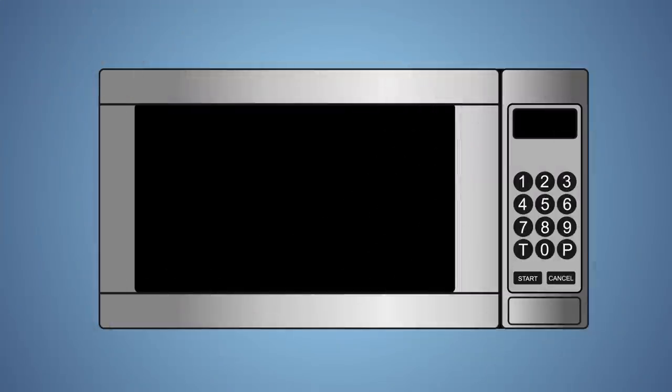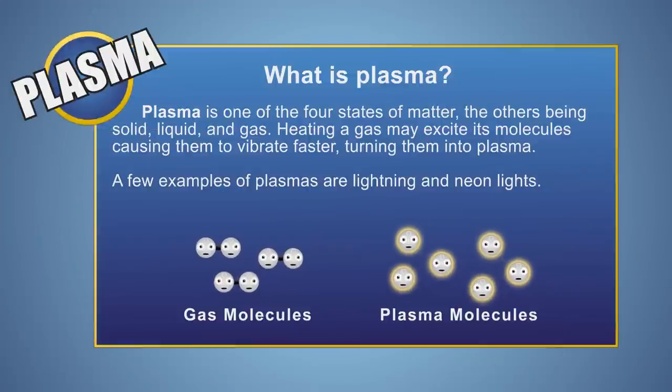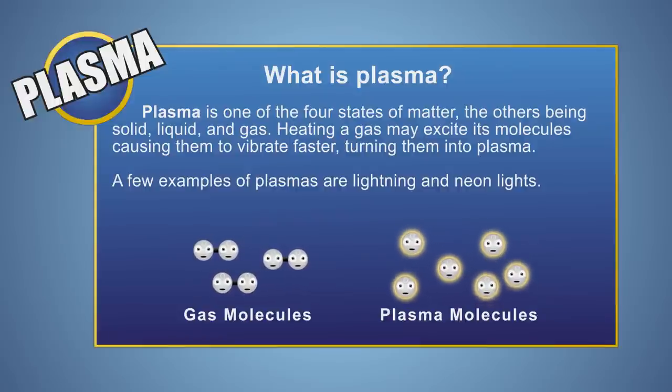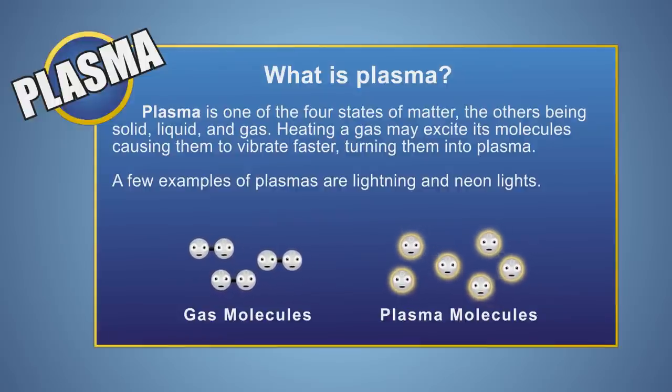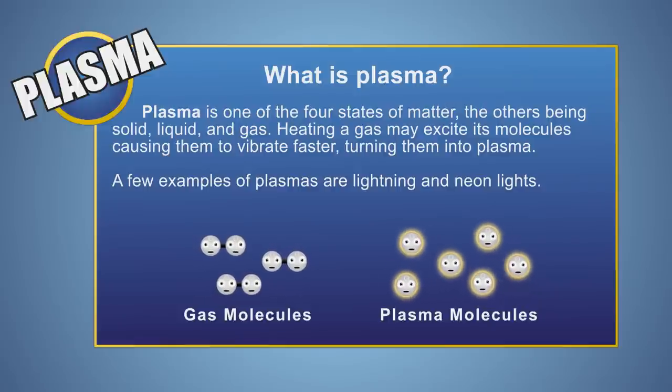Let's get our experiment a little closer. First, we have to look at what plasma is. Plasma is the fourth state of matter and is created by heating a gas hot enough to cause its molecules to reach an excited state. This excited state causes the gas molecules to release energy as light and heat.